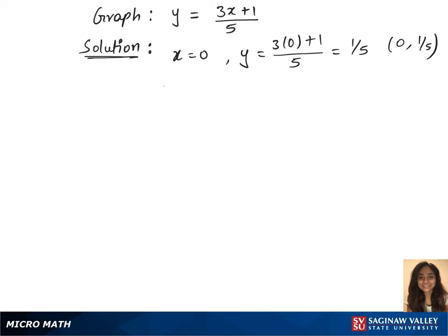Let's get the second point by substituting x as 1 in the equation: y equals 3 times 1 plus 1 over 5. This gives us y equals 4 over 5.